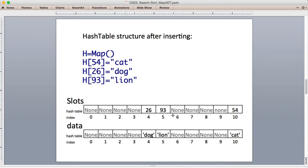And it's going to correspond at the same slot number in the data list. It's going to store the data, which is going to be cat, the string cat. So you can see the correspondence here.